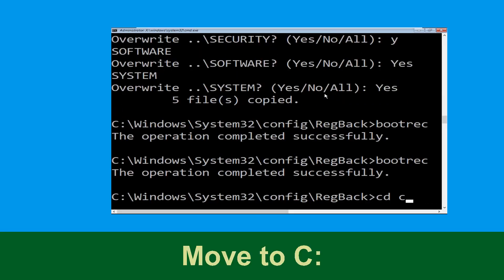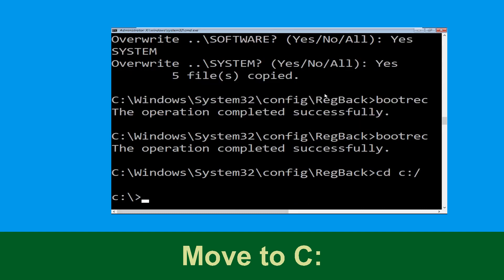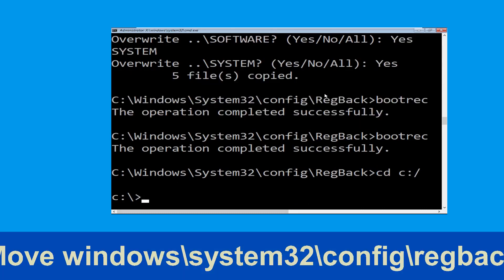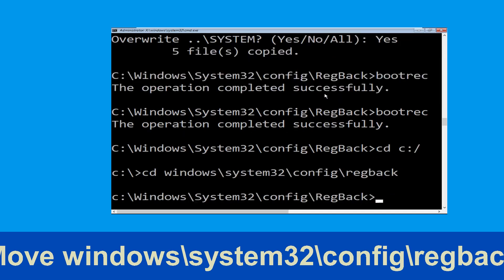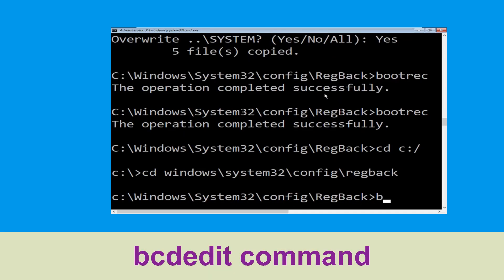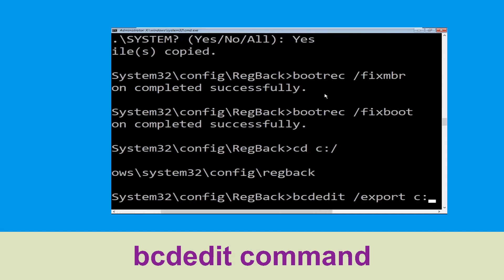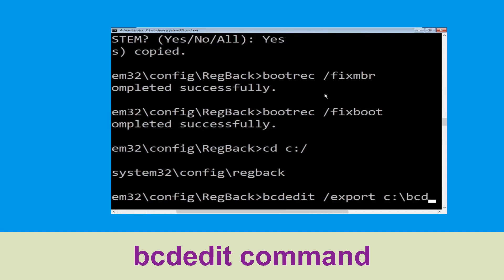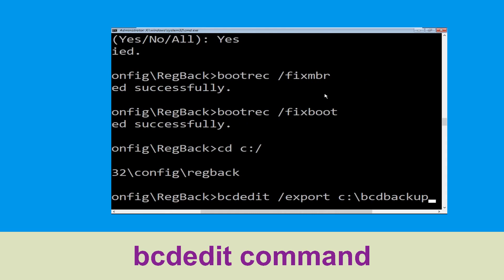Now type cd c:\ and hit Enter. Then type cd windows\system32\config\regback and hit Enter. Now type bcdedit /export c:\bcd_backup and hit Enter to export the BCD store.